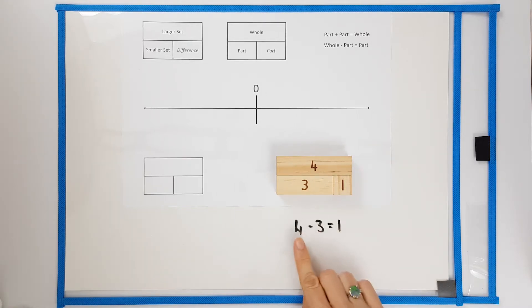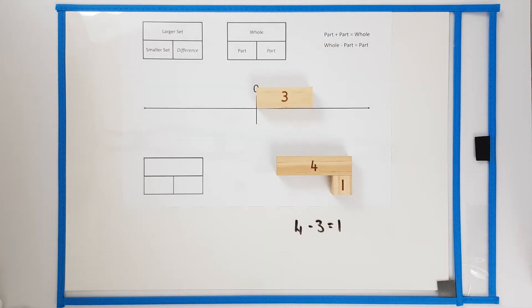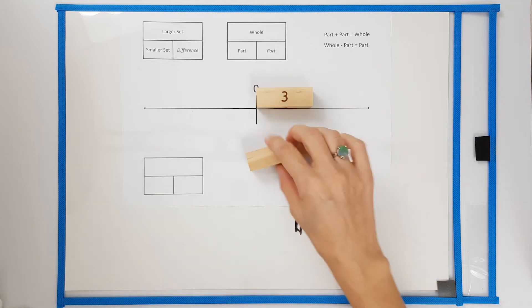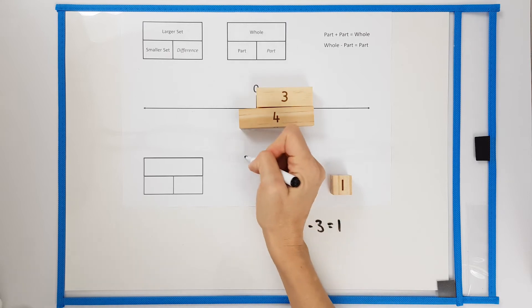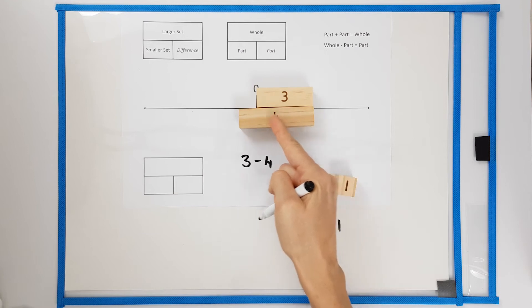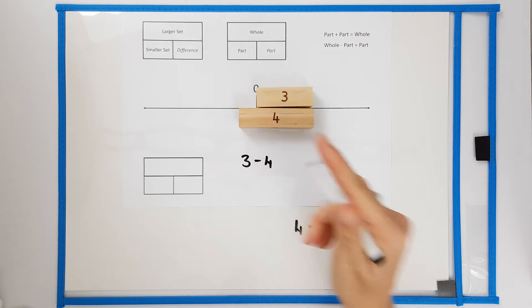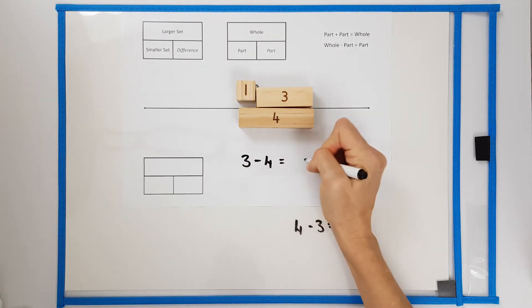You will notice I never say the big number or the large number subtract the small number because it is possible to start with a lesser number. We can do three subtract four. If we start with the whole of three and we subtract a part of four we end up less than zero. One less than zero. The answer is the part of negative one.